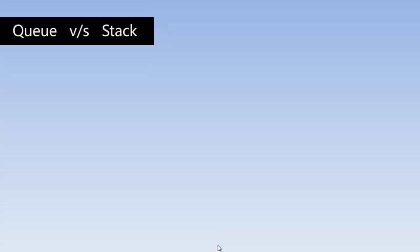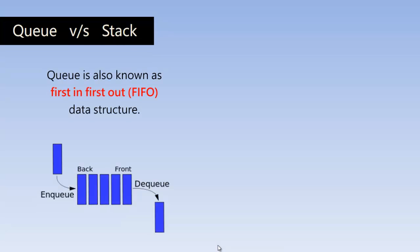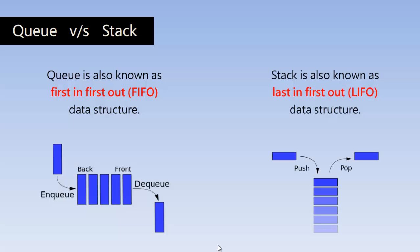So let us compare queue with stack. Queue is also known as first in first out data structure, because the element is deleted first which comes first. So in short this is called FIFO which stands for first in first out. And stack is also known as last in first out data structure, because the element which comes last will be removed first.